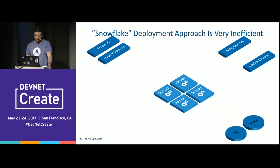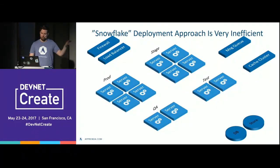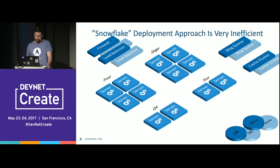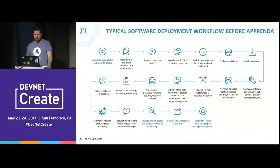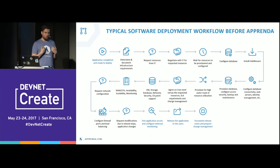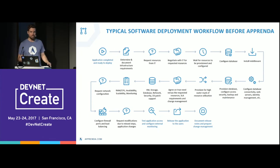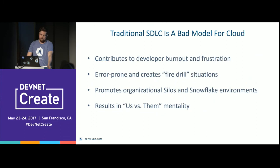You expand that out — you have it for production, all the different stages of production, QA, and test, and then for high availability you double that up. All the different handshakes involved, where primarily all you want to do is develop your application and get it into production. You have to go through the entire array of people in IT, and it's just not sustainable.